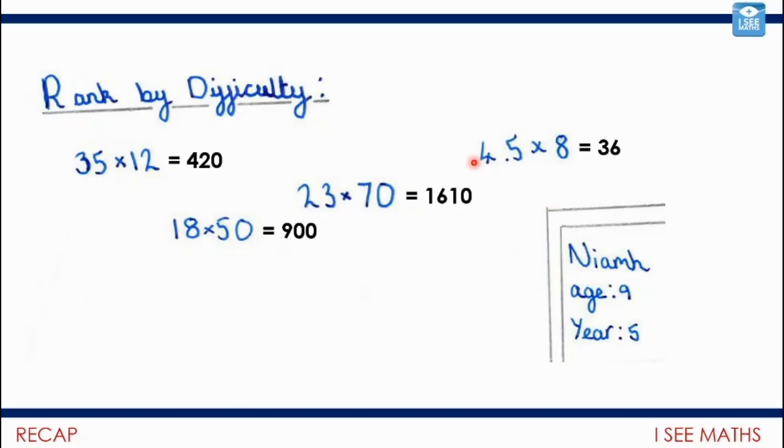I'm going to tell you the order that I went for. For a lot of these questions, I used doubling and halving. So 4.5 multiplied by 8, I actually changed that to 9 times 4, so I probably found that one the easiest. Then again, 35 times 12, I made 70 times 6. I think I'd go for this one next. 18 times 50 became 9 times 100. I didn't immediately see that strategy as clearly, but that for me was the next one. Whereas 23 times 70, I couldn't see as easy a way of manipulating the numbers around, so that was my order.